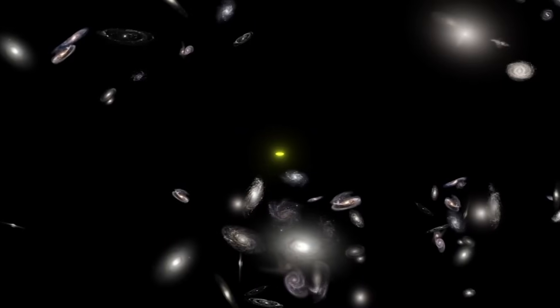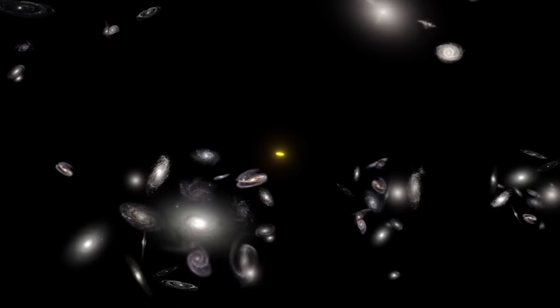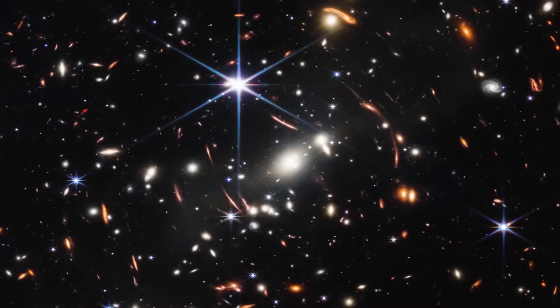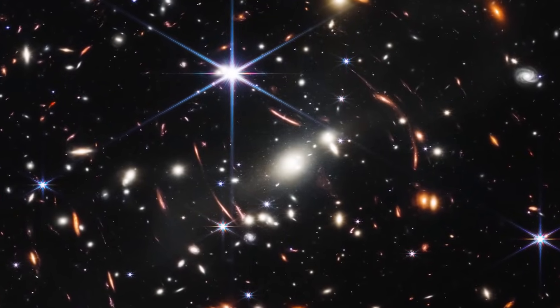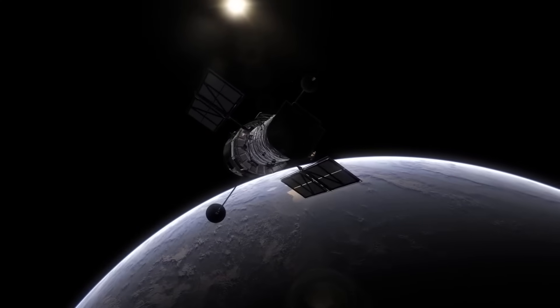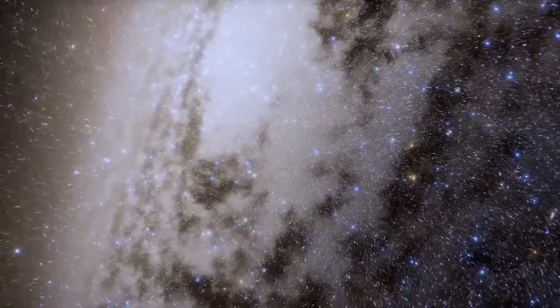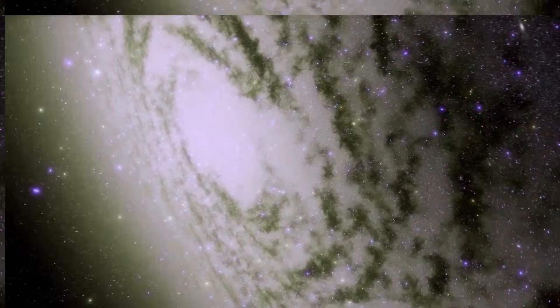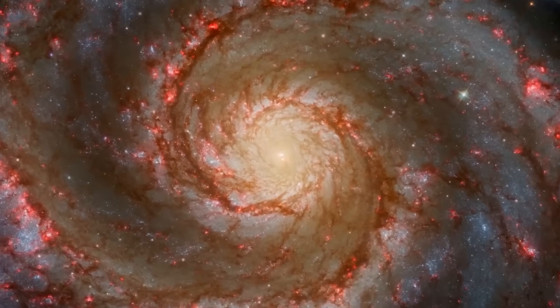The galaxies captured in these images appear to be too small, smooth, old, and numerous compared to the predictions of the Big Bang hypothesis. The fact that the observed galaxies are two to three times smaller than similar galaxies imaged by the Hubble Space Telescope completely defies the expected behavior in an expanding universe. According to the hypothesis, as the universe expands, objects should appear larger as distance increases. However, these James Webb observations show galaxies that defy that expectation.